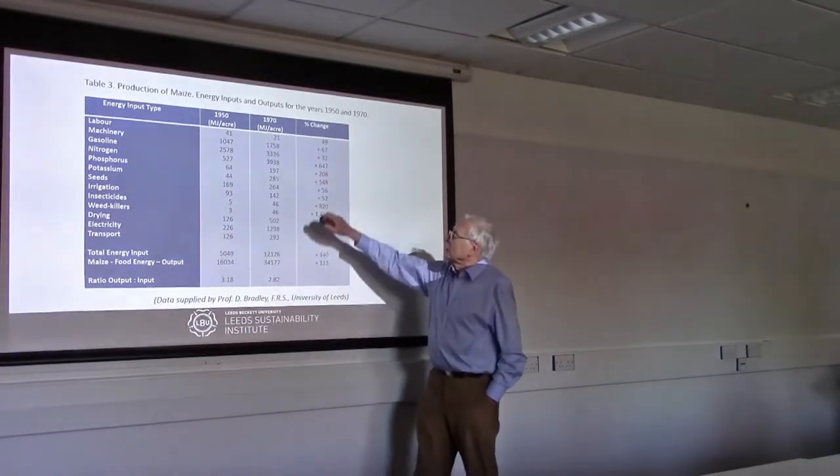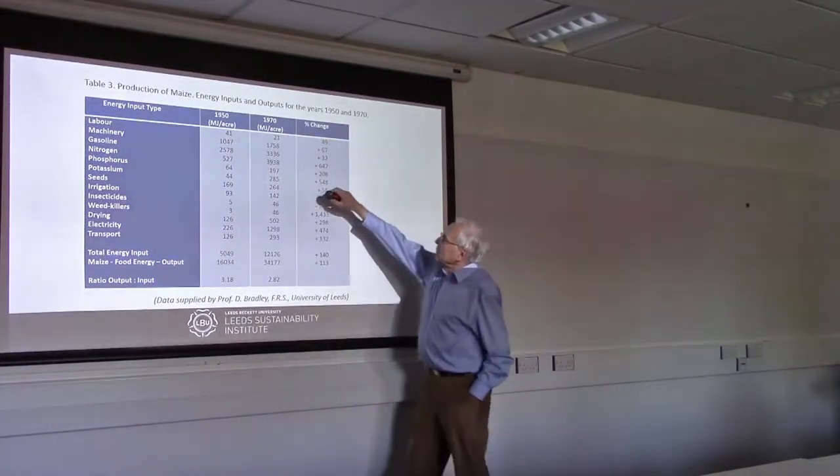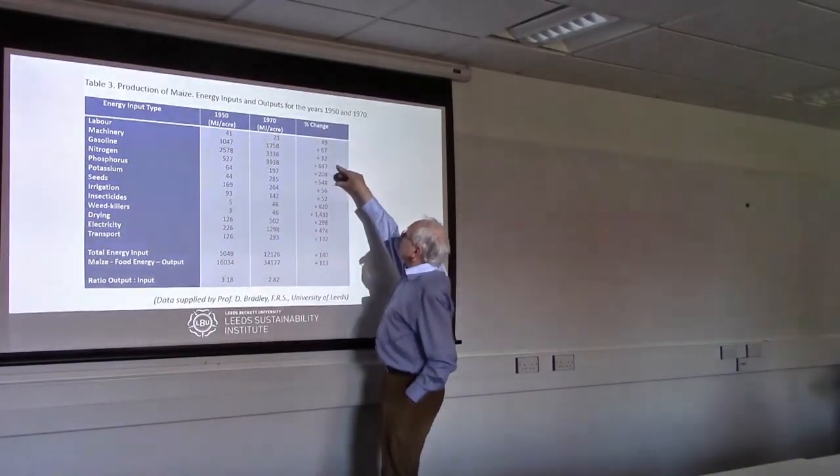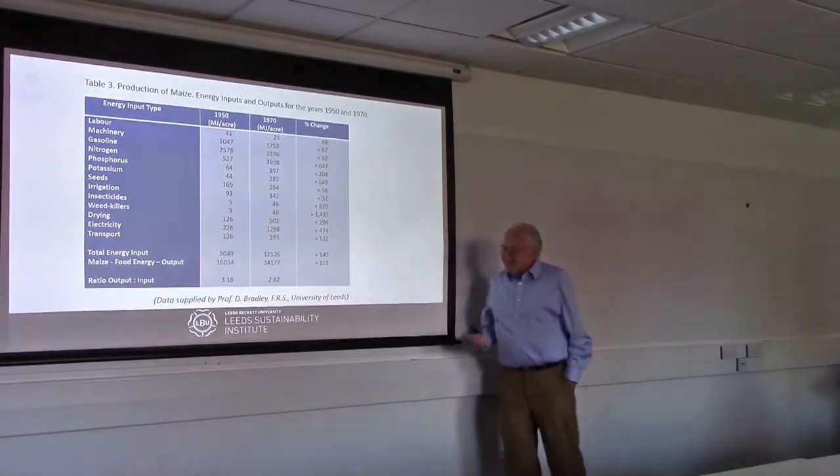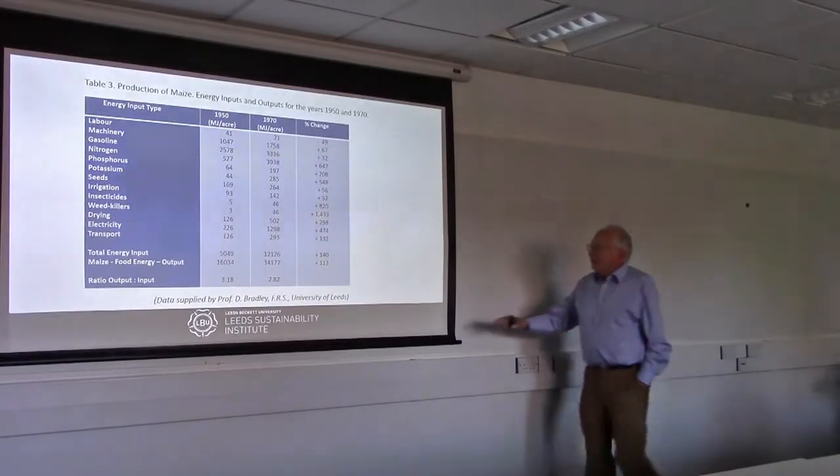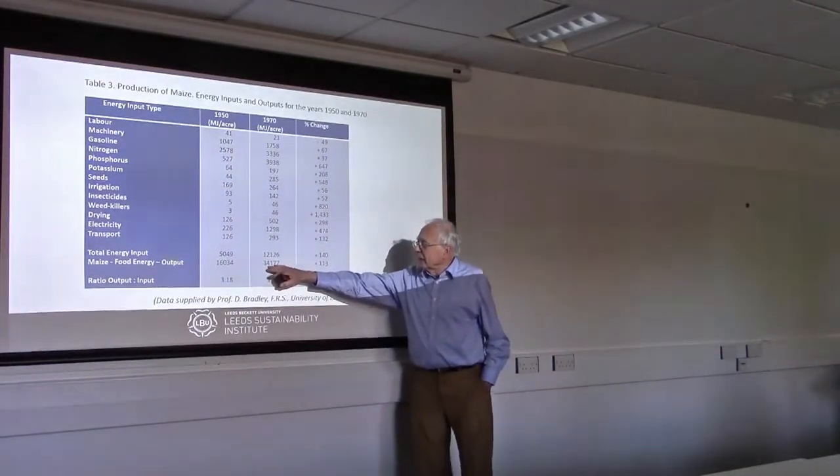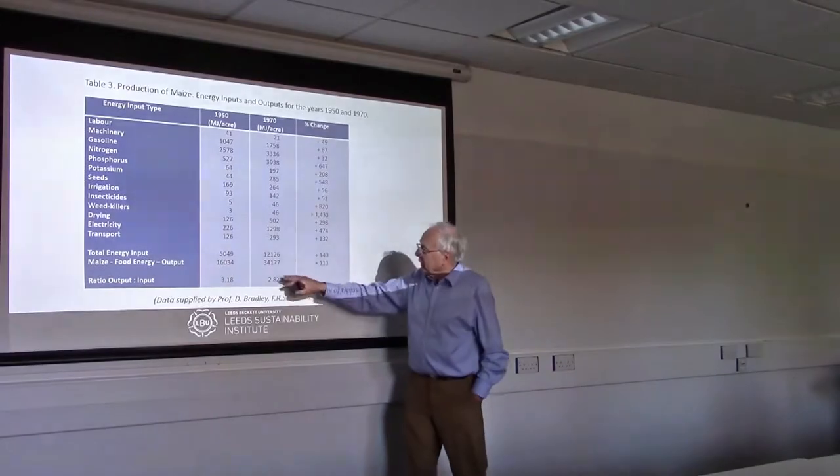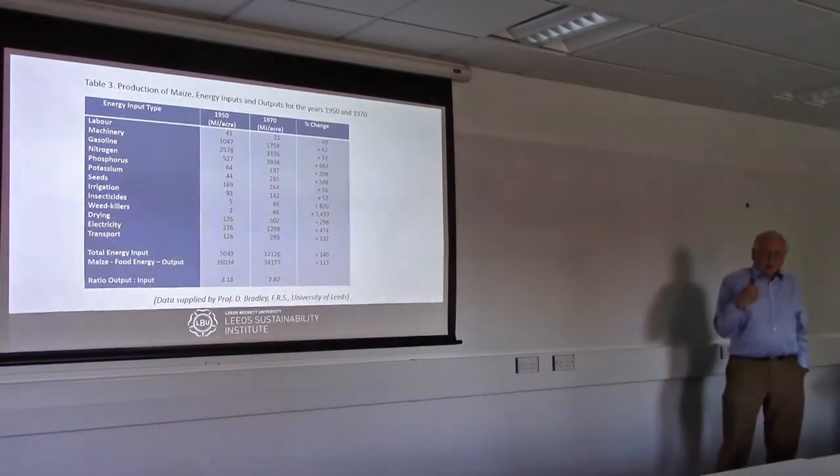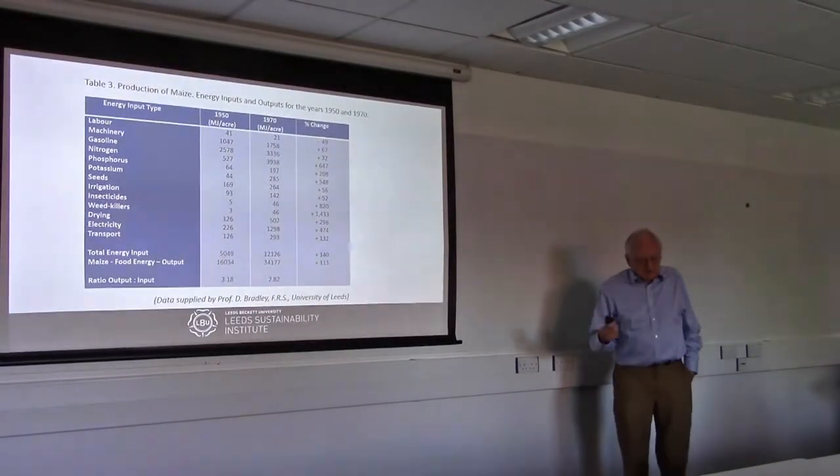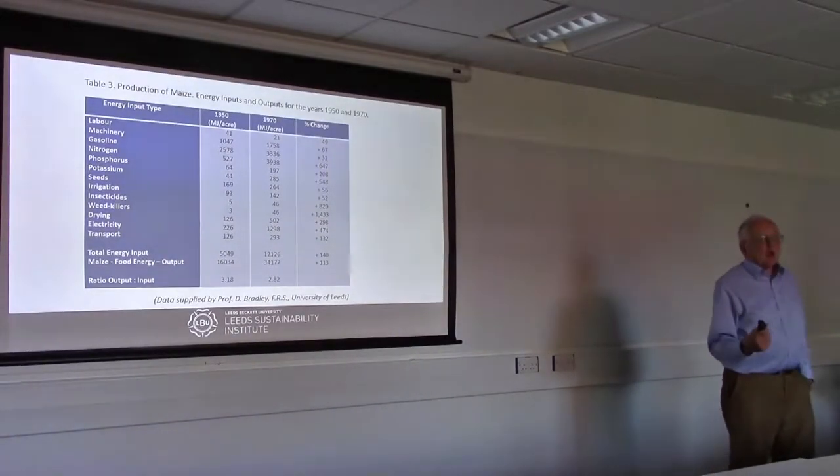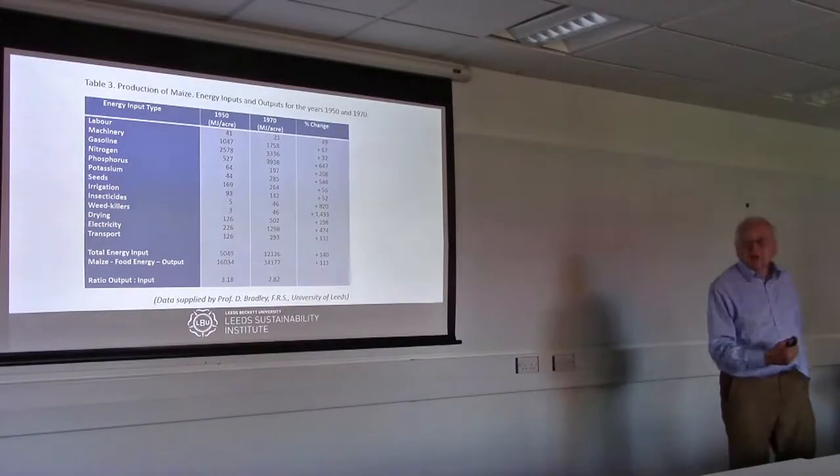But it isn't. If you actually look at the numbers and work out the percentage changes, and then look at the ratio of energy output to input, it's 3.18 there, and less in this case. Since 1970, people will be using more nitrogen, phosphorus, potassium - these huge increases. In other words, we're pumping a hell of a lot more energy in to gain this extra energy value. But thermodynamically, this is less efficient. One American professor said, modern industrial agriculture is a way of using land to turn oil into money. That's about it.